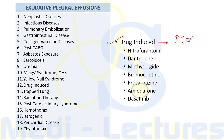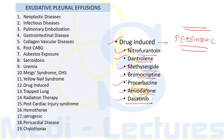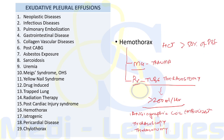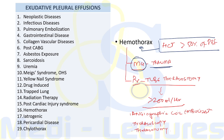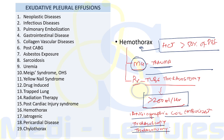Drug-induced pleural effusion should be suspected if there are increased eosinophils in pleural fluid. Causative drugs include nitrofurantoin, dantrolene, sodium valproate, methysergide, bromocriptine, procarbazine, amiodarone, and dasatinib. For hemothorax, if diagnostic thoracocentesis reveals bloody pleural fluid and the hematocrit of that fluid is more than 50% of peripheral blood, it is diagnostic of hemothorax. The most common cause is trauma. Treatment is with tube thoracostomy, but if collection exceeds 200 ml/hour, angiographic coil embolization, thoracoscopy, or thoracotomy is needed.